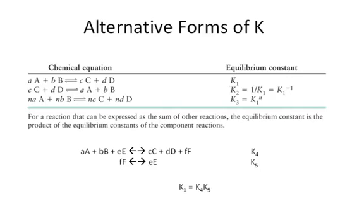This makes sense because K tells you — for example, if it's greater than 1 — that it's going to be a product-favored reaction. If you reverse the way you write the reaction, then you need to express K in that particular way, because now K would be less than 1, still indicating that C and D are the favored products.